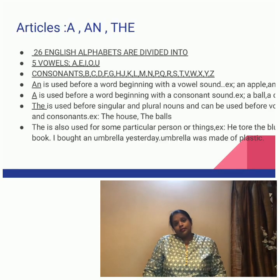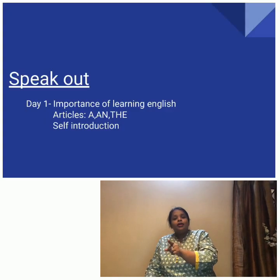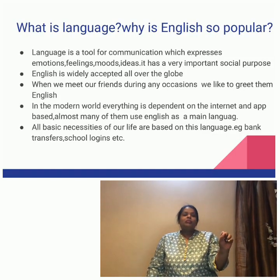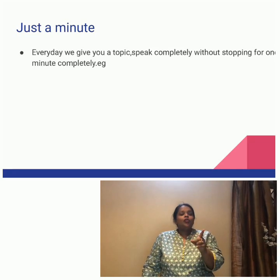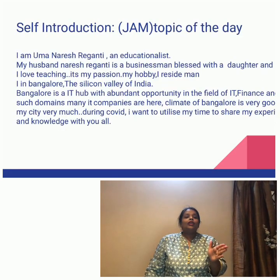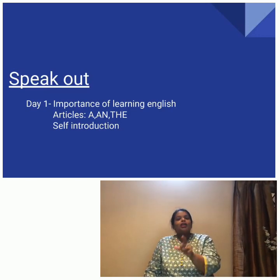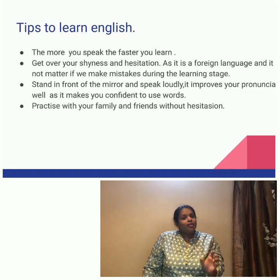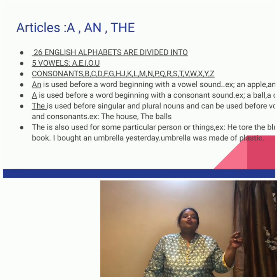'The' is also used when you are speaking about a particular thing. For example, 'He tore the blue book' — here the blue book is already known to you, already introduced. 'He tore a book' is okay, but when speaking about the specific blue book, you say 'He tore the blue book.' Another example: 'I like to eat an apple. The apple is good for health.' In the first sentence you introduced the apple, so in the second sentence, 'the apple' refers to that same apple already mentioned. The is used for any particular thing you are identifying — already known to you.